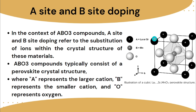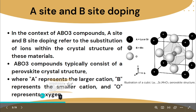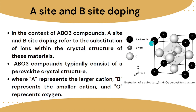In the perovskite structure, A represents the larger cation and B represents the smaller cation, while O represents oxygen. If the oxygen is replaced by a halide, the structure is substituted accordingly. The charge on A is +2, the charge on B is +4, and the charge on O is −2. When all charges are summed, the result is zero, showing that the compound is stoichiometric. If the sum were not zero, the compound would be non-stoichiometric.